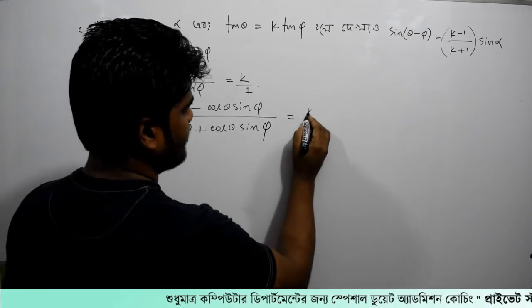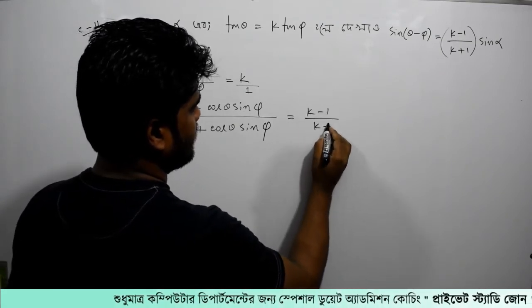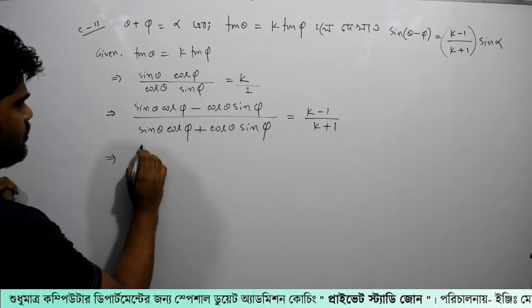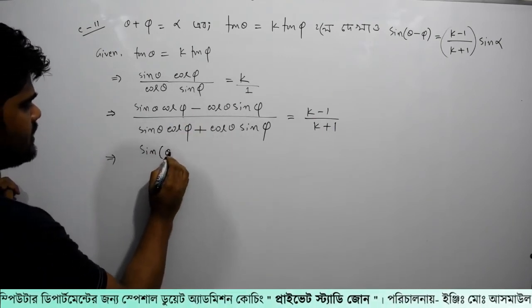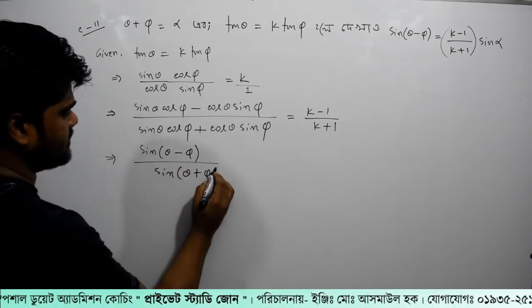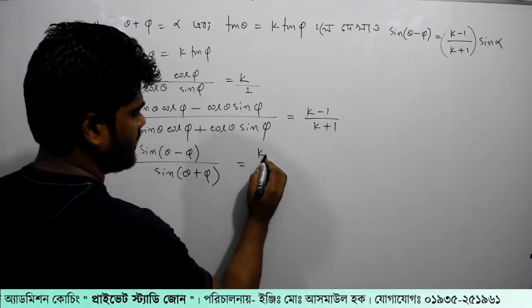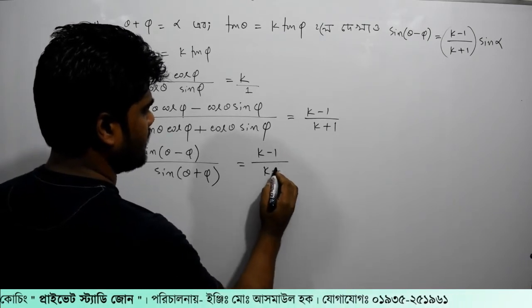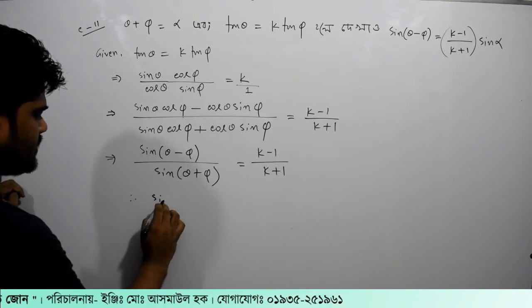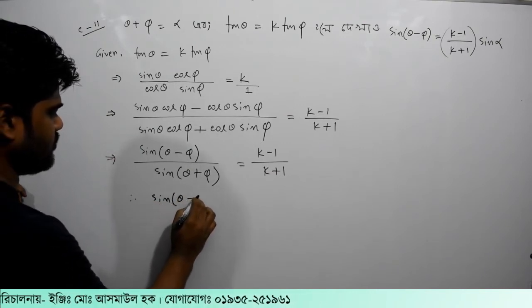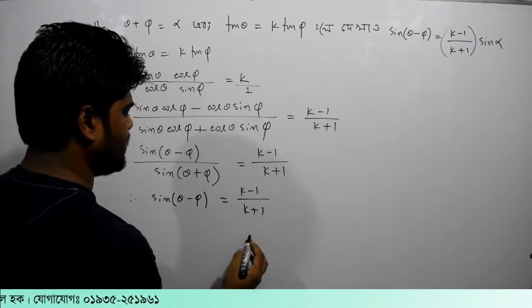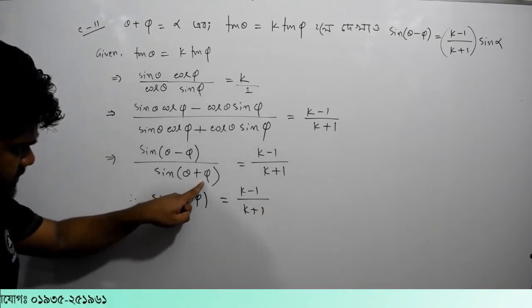Divided by, so this is the result of sin theta cos phi plus cos theta sin phi. And this is the result of k minus 1 divided by k plus 1. So the result is sin theta minus phi over sin theta plus phi equal to k minus 1 over k plus 1.